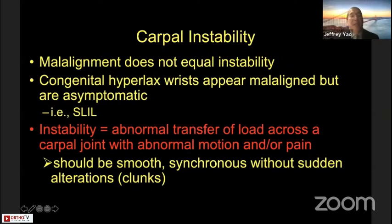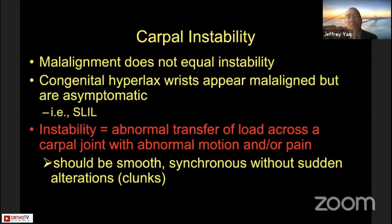When it comes to instability, malalignment does not equal instability — that's important to remember. In our Asian American cohort of patients, we often see congenital hyperlax wrists in female Asian Americans which may appear malaligned but are completely asymptomatic. We often see scapholunate gapping but a completely asymptomatic patient with a normal scapholunate ligament. Instability is really an abnormal transfer of load across the carpal joint with abnormal motion and, more importantly, pain.